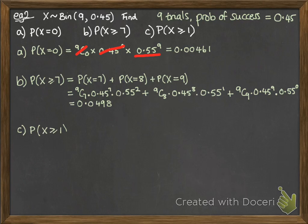And finally, the probability of x is greater than or equal to 1. Now, there is a faster way to do this. We don't really want to do 1 and 2 and 3 and 4 all the way up to 9 and add them together. But we can recognise it's the same as if we'd done 1 minus the probability of x equals 0. That one we've already worked out in A so that becomes a very quick calculation to do.